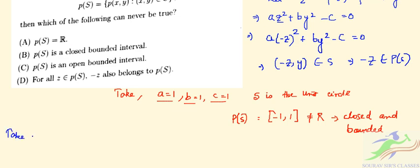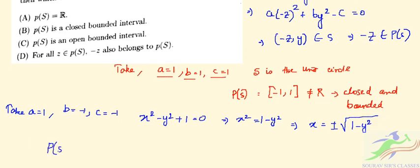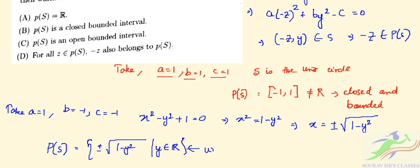Now take a = 1, b = -1, c = -1. The equation becomes x² - y² + 1 = 0, so x² = y² - 1, meaning x = ±√(y² - 1). From here, p(S) = {±√(y² - 1) : y ∈ R}. You can see that this is an unbounded interval — it is not bounded.